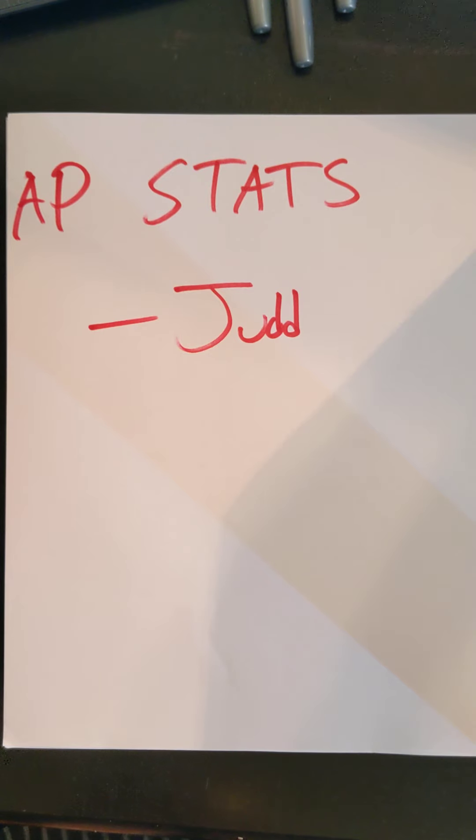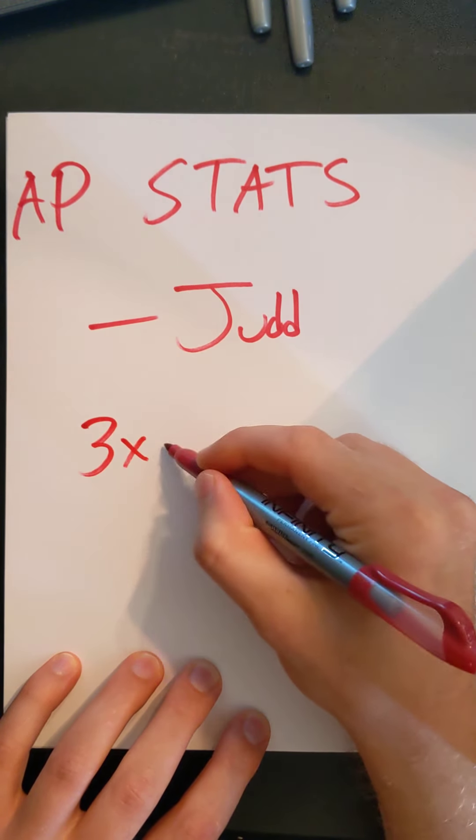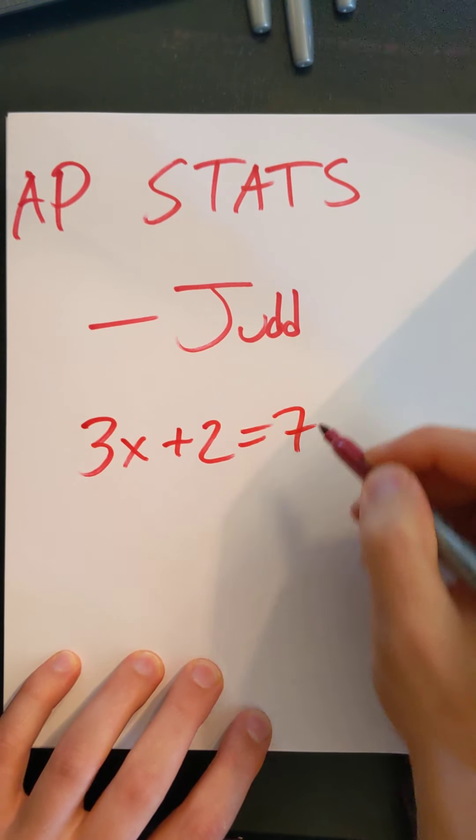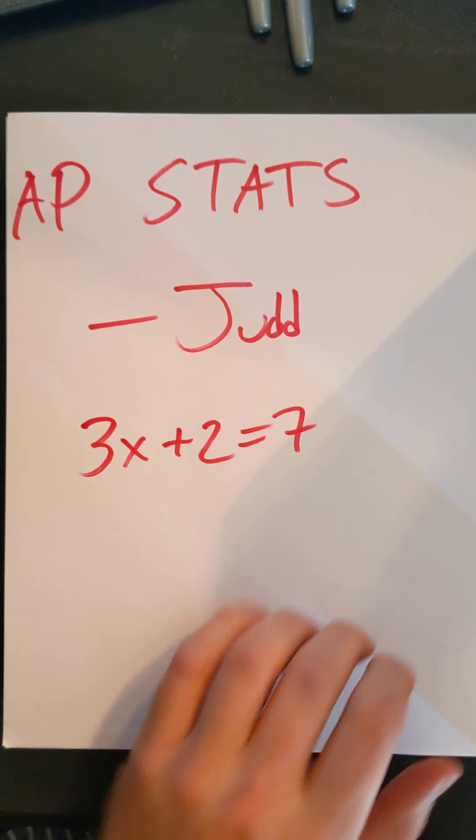Today we're going to be discussing the different ways that we consider variables. I know most of you are used to thinking a variable is something like 3x plus 2 equals 7, and then you go ahead and solve and isolate. But today we're going to talk about different kinds of variables within statistics.